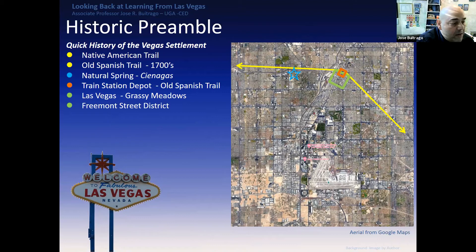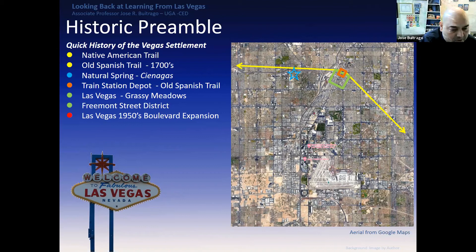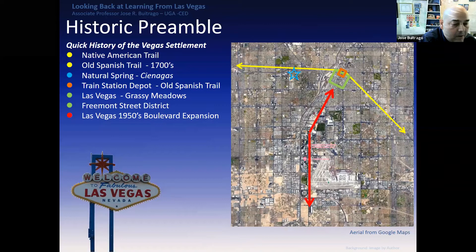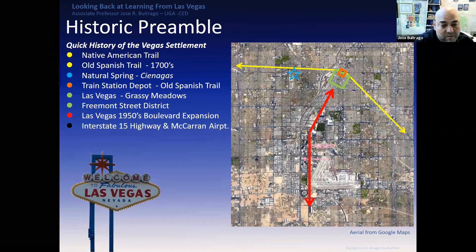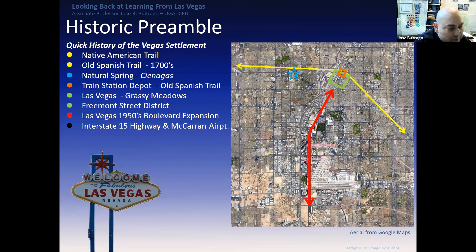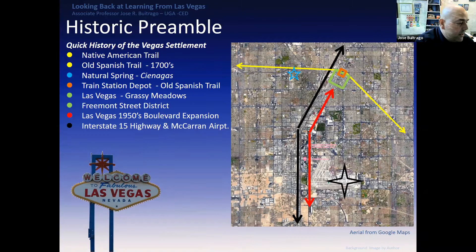This is the extent of the Fremont Street District, which the book focused much of its analysis on. Las Vegas then started to expand out of the Fremont District looking for more space, and that's when the 1900–1950s booming era of the Strip began. The big casinos started developing major resort developments along Las Vegas Boulevard. The Interstate 15 and McCarran Airport were great contributors to the fast expansion of Las Vegas as we know it today.